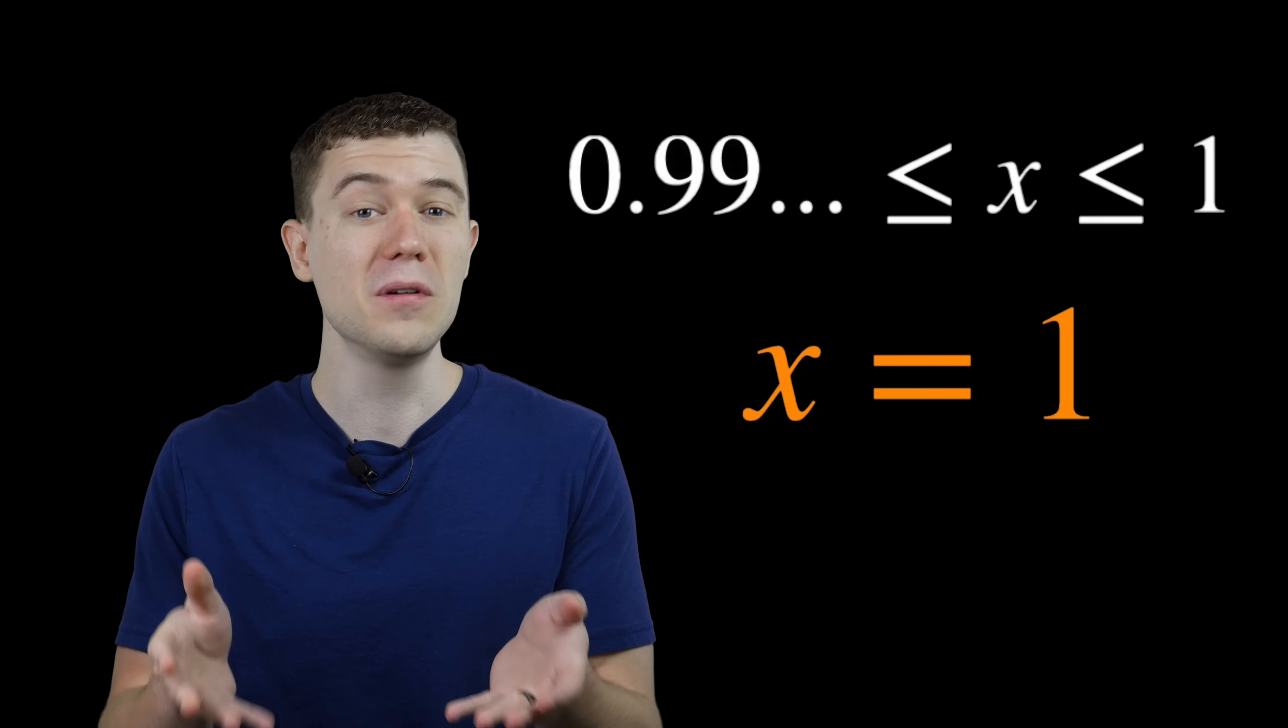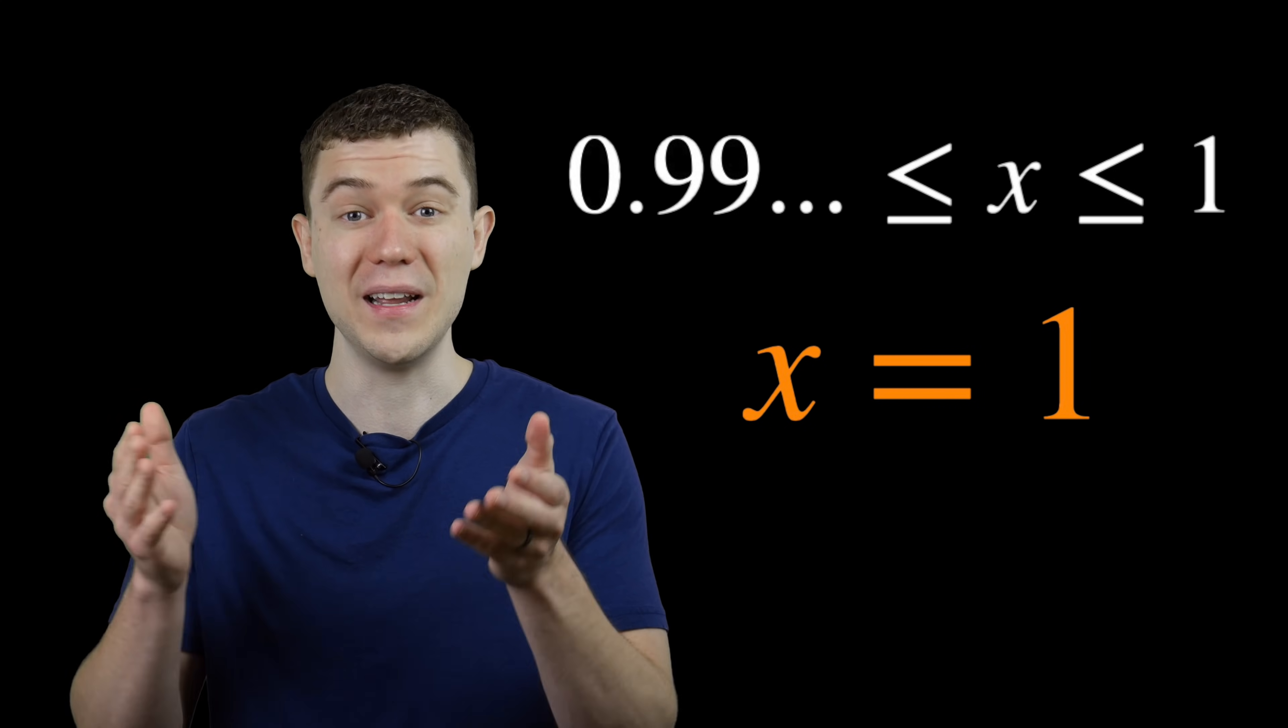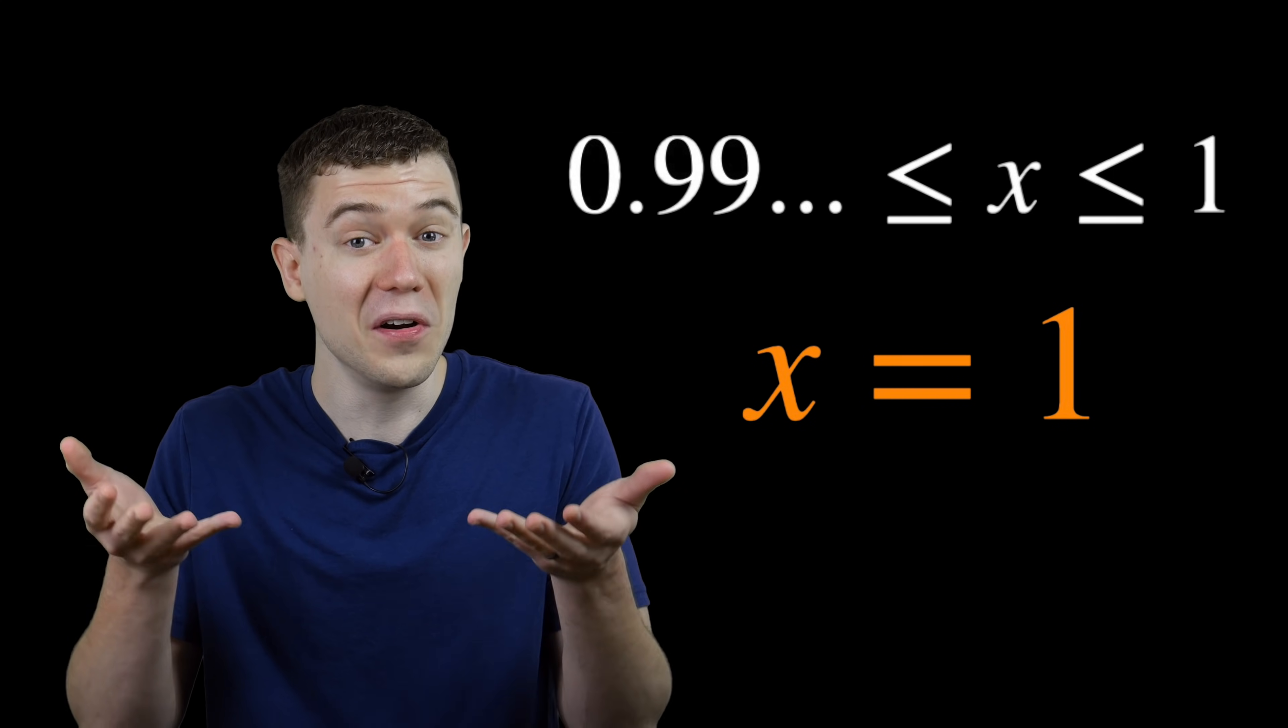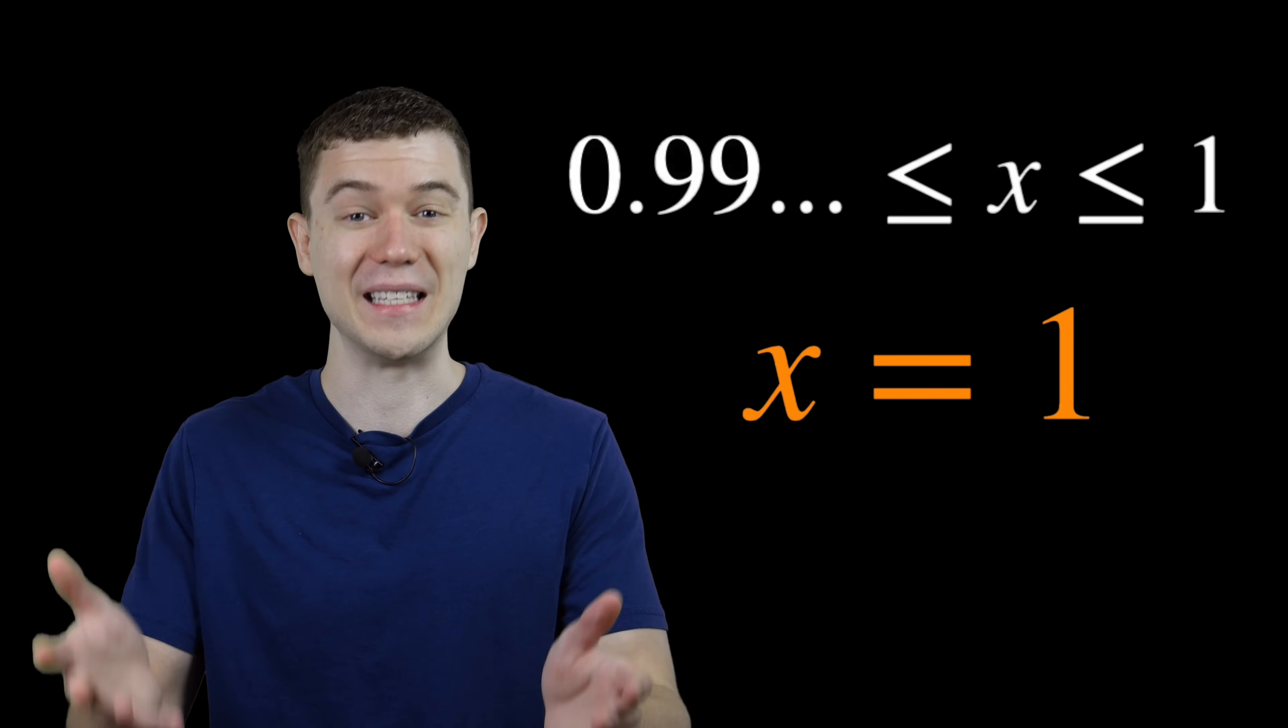And if the only number between 0.9 repeating and 1 is 1, it must be that those numbers are not different. They have to be the same number.